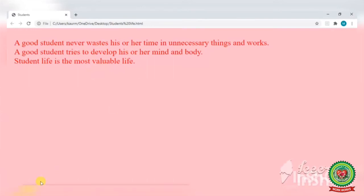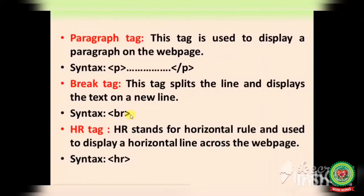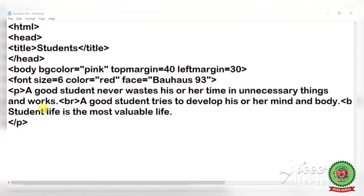The next tag is the HR tag. HR stands for Horizontal Rule and is used to display a horizontal line across the webpage. This tag simply draws a line on your web page. For example, if you want to divide your page into two parts — one section for a paragraph and another for different work — you use the HR tag for that partition. Open Notepad and write the HR tag.